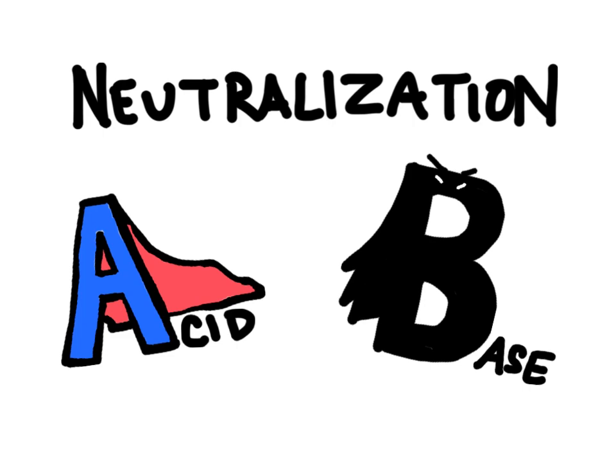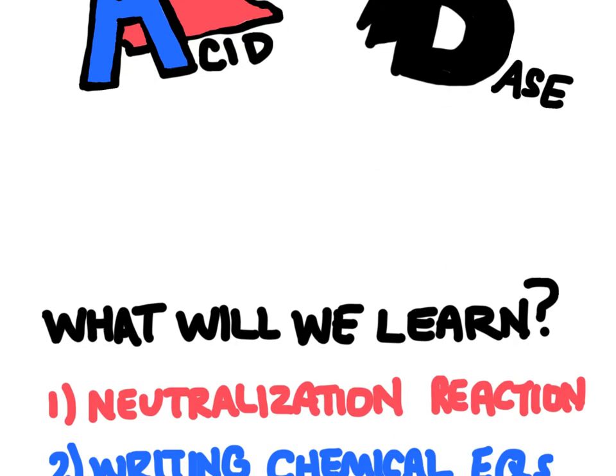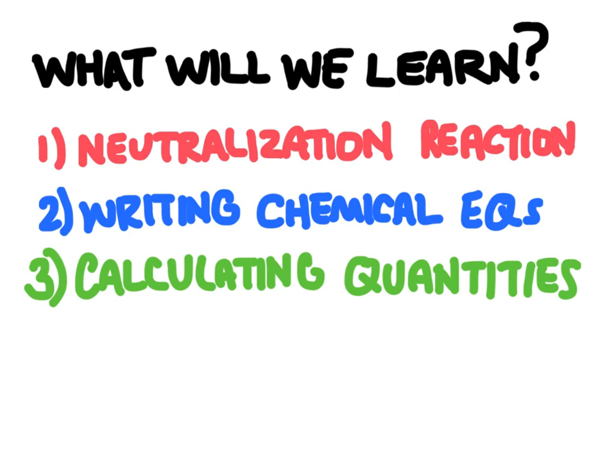In this video we're going to learn about acid-base neutralization. First we're going to learn the definition of a neutralization reaction, and then we're going to write chemical reactions for some examples of neutralization reactions. And then finally we're going to calculate the amounts of substances that could be produced or required to perform a neutralization reaction.